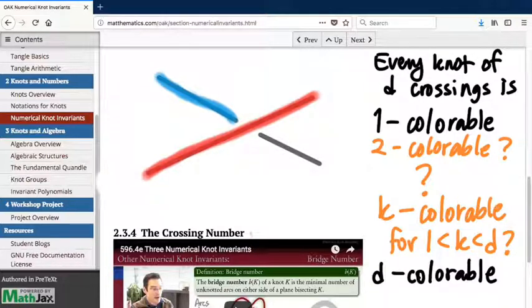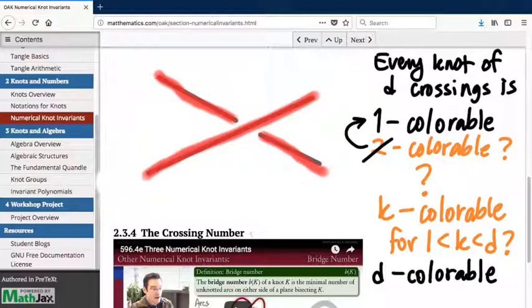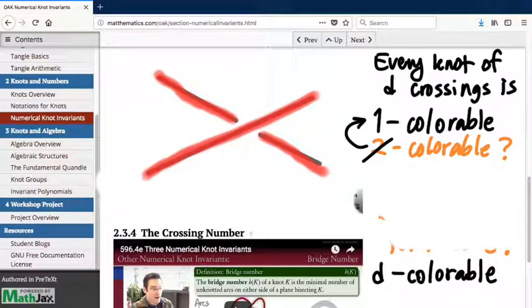And the only way to two-color a knot is just to color everything the same color, which is not really a two-coloration at all. So two-colorability is not an interesting question. Every two-coloration of a knot is really just a one-coloration. So we're not using the second color. The smallest number of colors in which this is an interesting question is three. So three is where we're going to pick up the story.